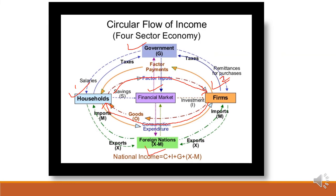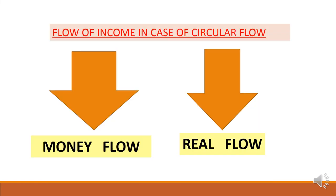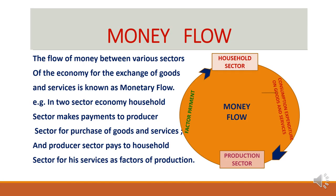Now the next concept we are going to discuss is how this flow takes place. The flow in circular flow of income is divided into two parts: one is the monetary flow and the second one is the real flow. The flow of money between various sectors of the economy is known as monetary flow.